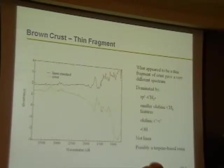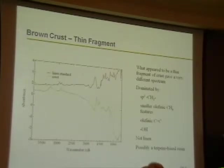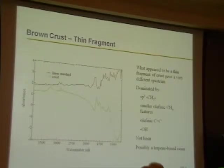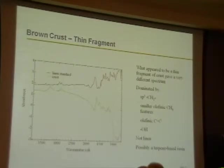So they went back to look and see what the heck could give this kind of a spectrum. The closest they could come to it was a terpene-based resin, because of the hydroxyl groups. There are only a limited number of hydroxyl groups in terpene, whereas with other materials there are many hydroxyl groups, especially in cellulose. So he made the statement: possibly a terpene-based resin was that crust.